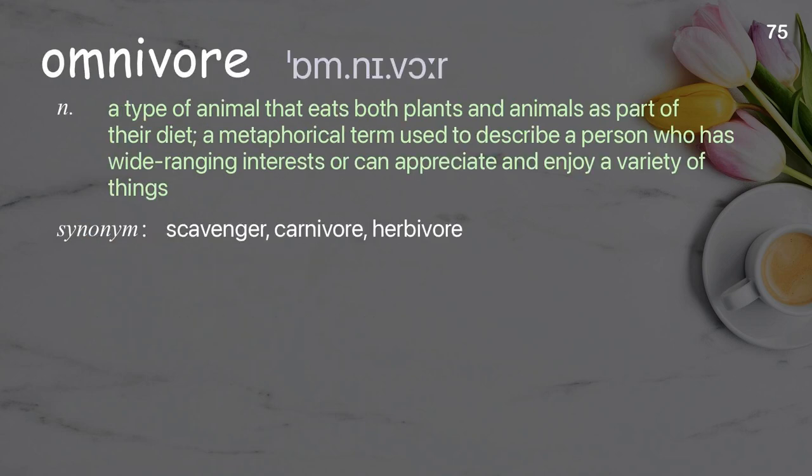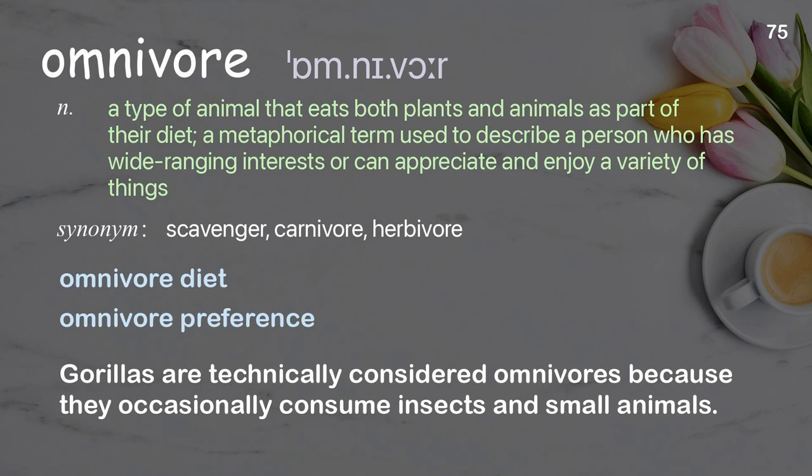Omnivore: A type of animal that eats both plants and animals as part of their diet; a metaphorical term used to describe a person who has wide-ranging interests or can appreciate and enjoy a variety of things. Examples: Omnivore diet, omnivore preference. Gorillas are technically considered omnivores because they occasionally consume insects and small animals.